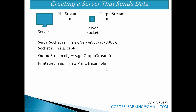Finally, this PrintStream is used by the server to send data to the client. To send data, we use the print() or println() method of PrintStream: ps.println(str). After this, we have to close the connections by closing all streams and the socket at the server side: sss.close() — this closes the ServerSocket; s.close() — this closes the Socket; ps.close() — this closes the PrintStream.